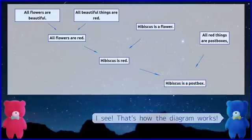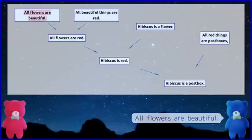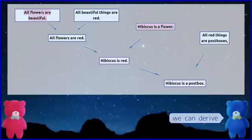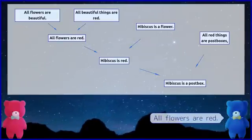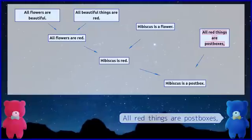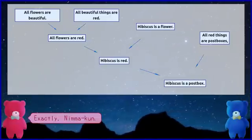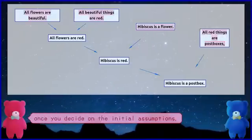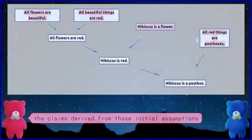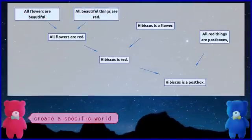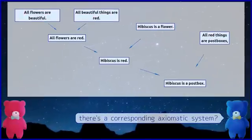I see, that's how the diagram works. So, even though it's not written here, from 'All flowers are beautiful' and 'Hibiscus is a flower,' we can derive 'Hibiscus is beautiful.' And from 'All flowers are red' and 'All red things are postboxes,' we can derive 'All flowers are postboxes,' right? Exactly. So, once you decide on the initial assumptions, including claims not written in this diagram, the claims derived from those initial assumptions create a specific world. This world is called an axiomatic system. So for each set of assumptions, there's a corresponding axiomatic system.